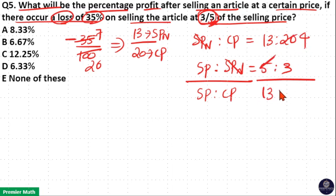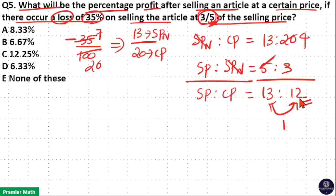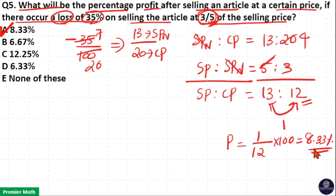4 into 3 is 12, so the selling price to cost price ratio is 13:12. The difference between selling price and cost price is 1 unit. This 1 unit is generated from the cost price of 12 units, so profit equals 1/12 × 100, which is 8.33%. So option A is your answer. You can also do this using a different method if you have any confusion.